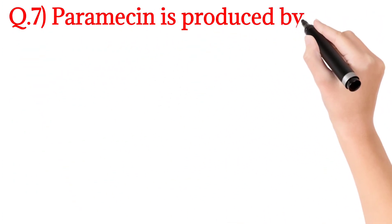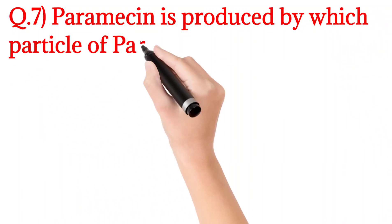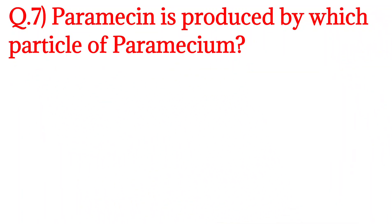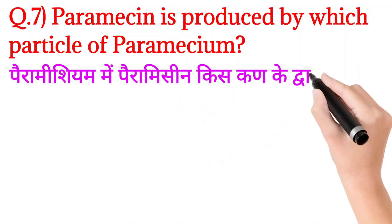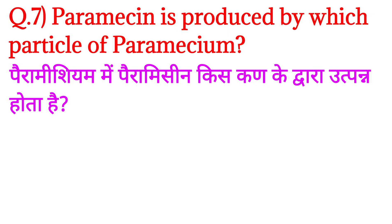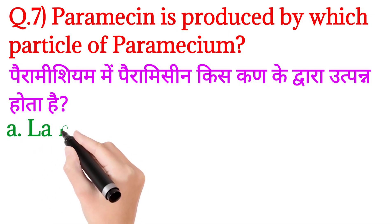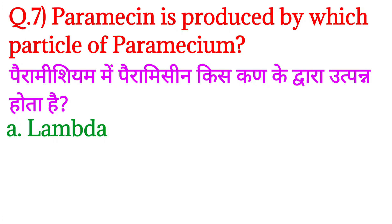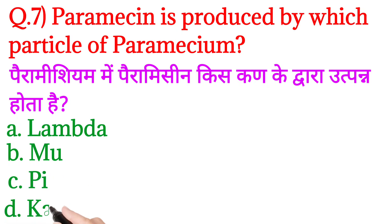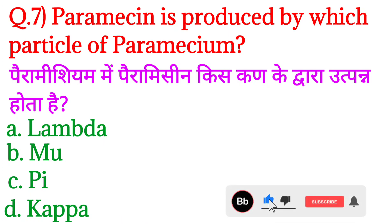Next question, question number 7 — Paramecium is produced by which particle of Paramecium — Paramecium kis particle ke dwara utpann hota hai? Option A: lambda, option B: mu, option C: pi, and option D: kappa. Chalo iska answer hoga option number D: kappa.